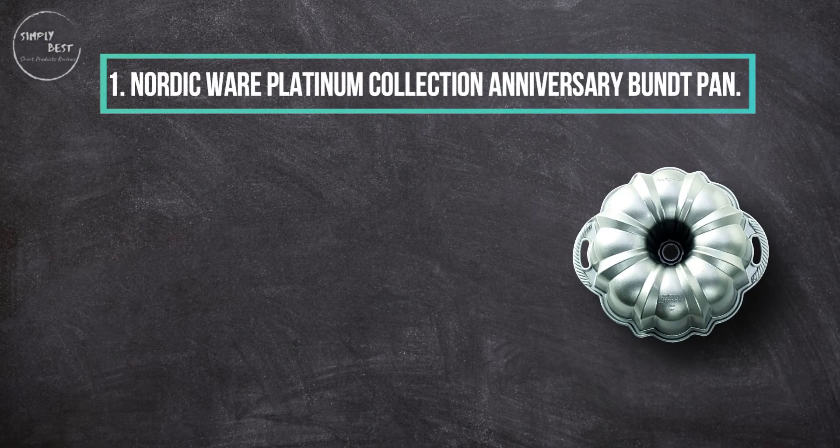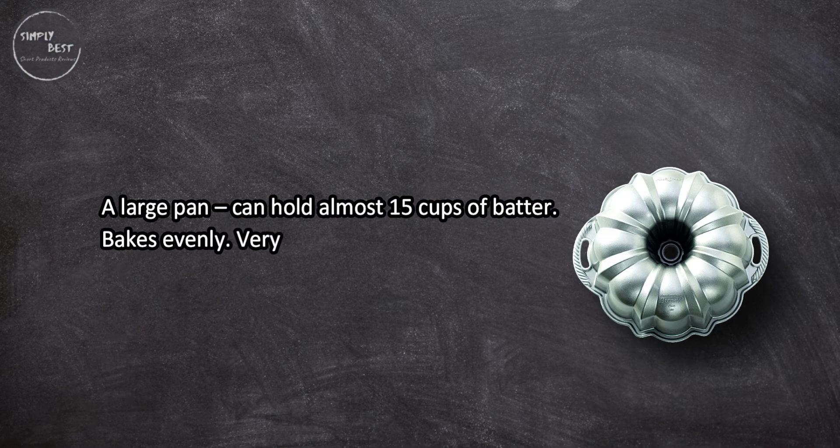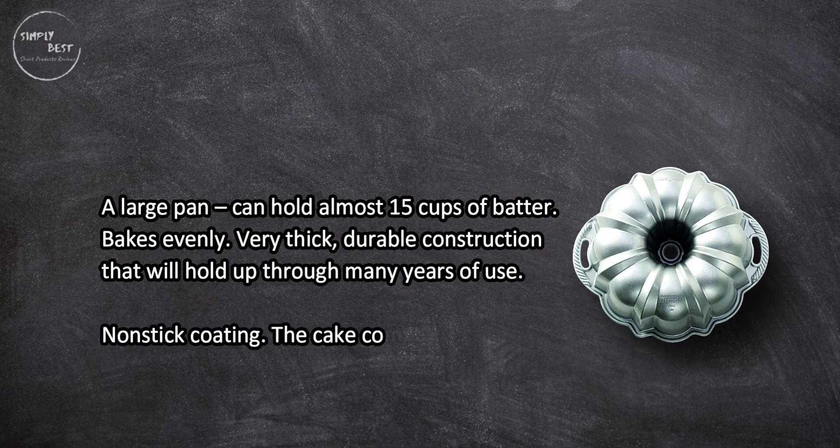At number one, Nordic Ware Platinum Collection Anniversary Bundt Pan. A large pan, can hold almost 15 cups of batter. Bakes evenly, very thick durable construction that will hold up through many years of use. Nonstick coating, the cake comes out of the pan smoothly.